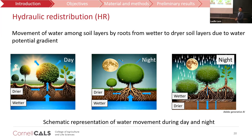What is hydraulic redistribution? The definition is the movement of water from wet to dry regions of the soil using plant roots. Plant roots move water from the wet region to the dry region. During daytime, transpiration demand is very high, leading to very low water potential and a significant water potential gradient from ground to leaf level, so water moves from ground to leaf.